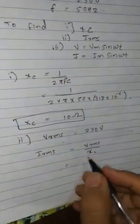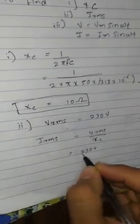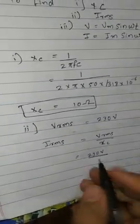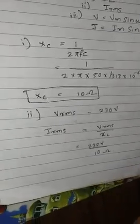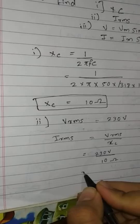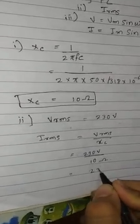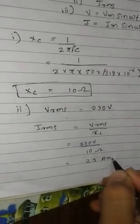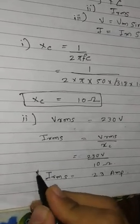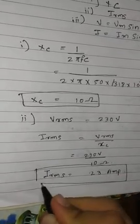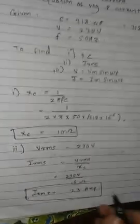IRMS equals VRMS over XC. Now we have to find out the value, which gives us 23 amps.